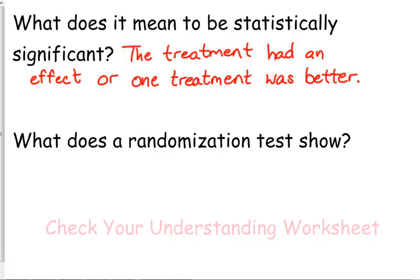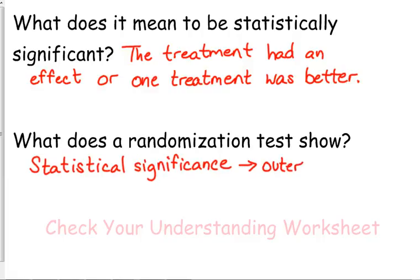What does the randomization test show? Well, that shows statistically significant, or statistical significance. That's how we can actually decide significance. And the key is the outer 5% of the data on the histogram. That's the purpose of the randomization test is to show whether it was statistically significant or not.